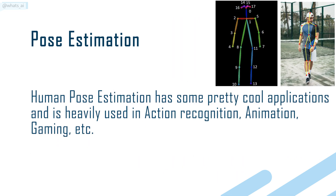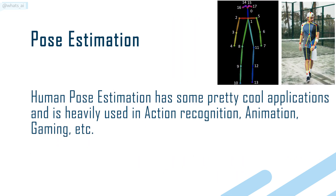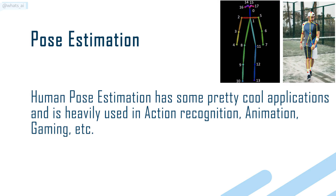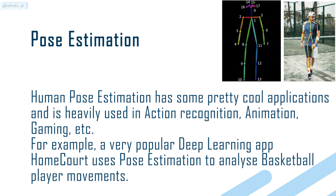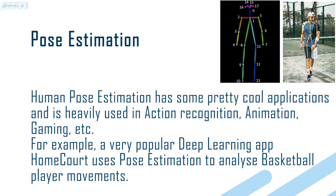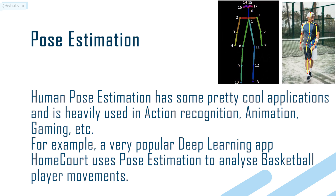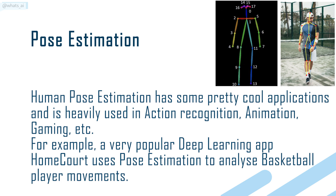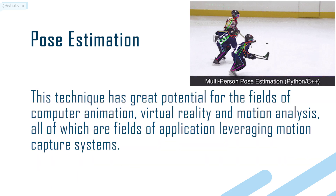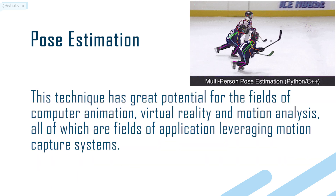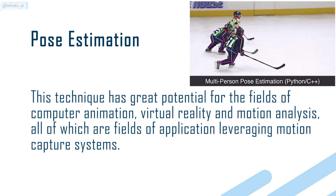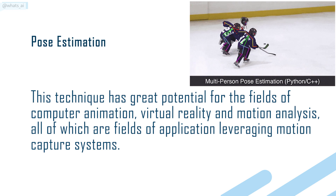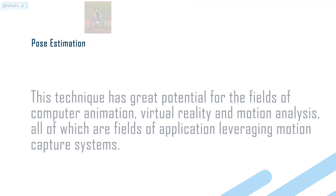Human pose estimation has some pretty cool applications and is heavily used in action recognition, animation, gaming, and more. For example, a very popular deep learning app, HomeCourt, uses pose estimation to analyze basketball player movements. This technique has great potential for the fields of computer animation, virtual reality, and motion analysis, all of which are fields of application leveraging motion capture systems.